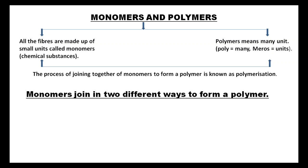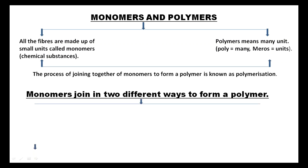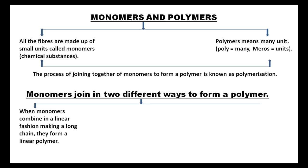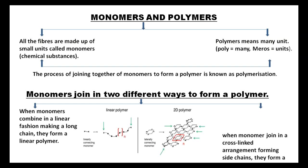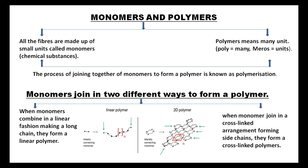First, when monomers combine in a linear fashion making a long chain, they form a linear polymer. Second, when monomers join in a cross-linked arrangement forming side chains, they form a cross-linked polymer.